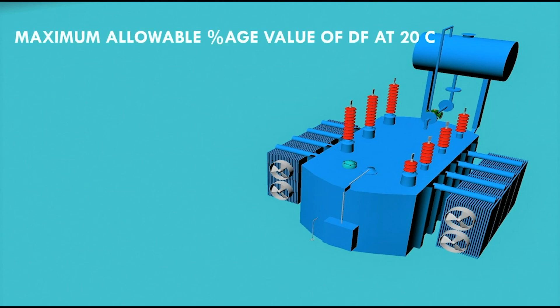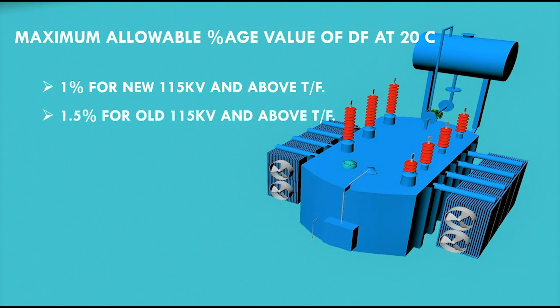Now we discuss the maximum allowable percentage value of dissipation factor at 20 degrees Celsius. It is 1% for new 115 kV and above transformer, 1.5% for old 115 kV and above transformer whereas 5% for low voltage distribution transformers.